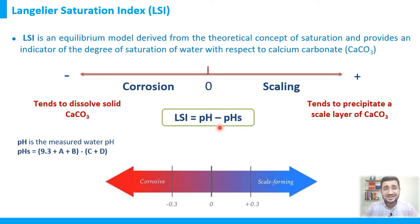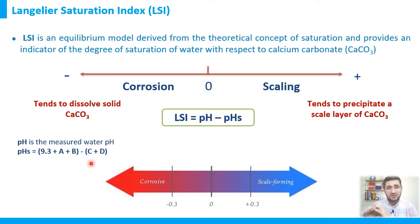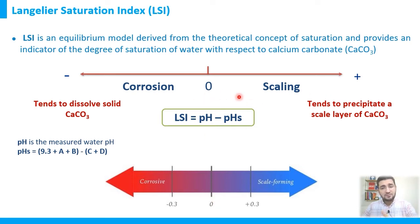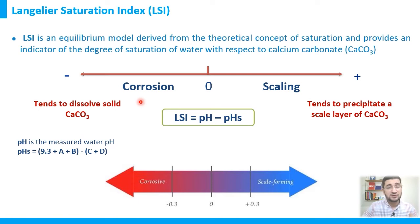We know pH is measured through a pH meter. The pHs is calculated according to the equation: pHs = 9.3 + A + B − (C + D), where A, B, C, and D are constants related to the parameters used to calculate LSI. In summary, positive LSI means scaling tendency — water tends to precipitate a calcium carbonate layer — while negative LSI means we may face corrosion, as there is no calcium carbonate to form a protective layer.